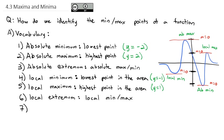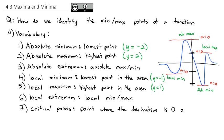We have a special name for those points — they're called critical points. Critical points are points where the derivative is either 0 or undefined. What's really important is that a critical point might be a local extremum, but it's not guaranteed to be a local min or max or even an absolute min or max. It is, however, a very good candidate.